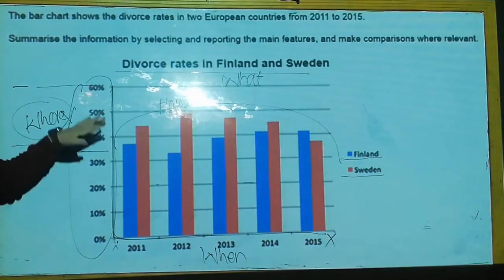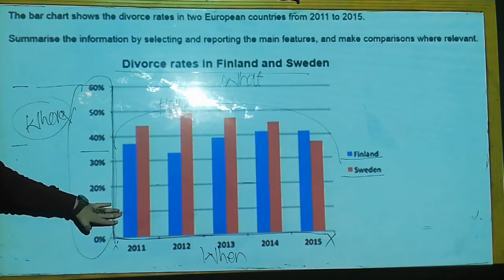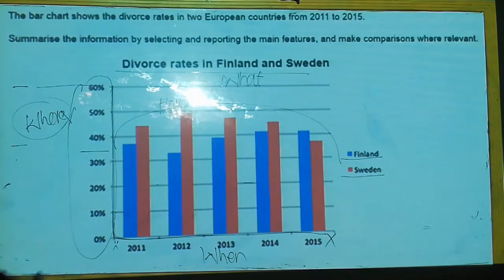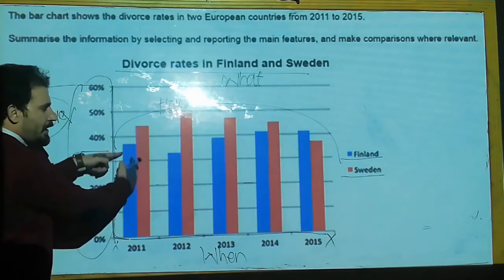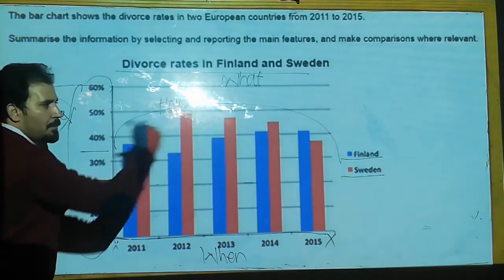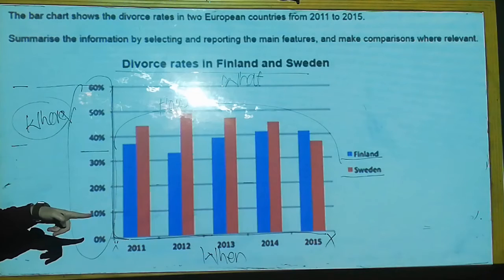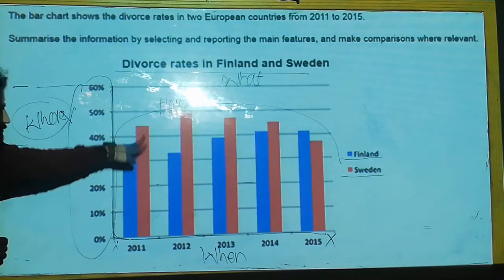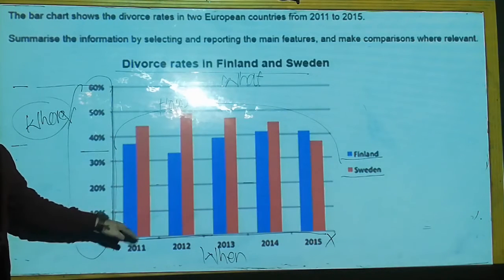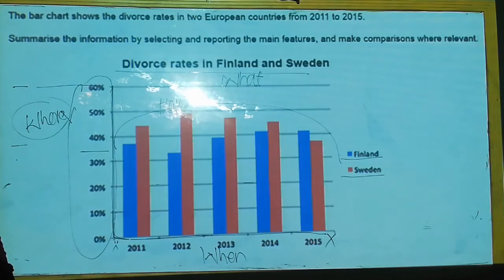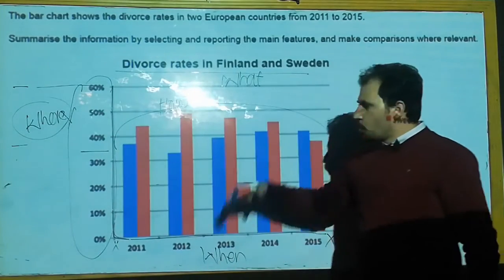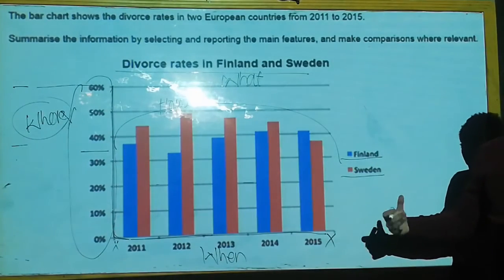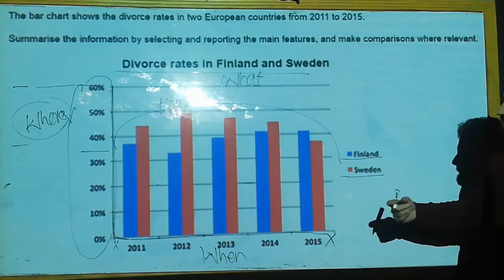We can take a start from the beginning. This is the first portion here. The blue line shows fan length — it's about Finland. And the red line shows Sweden. We want to write down the overview, the first overview paragraph.